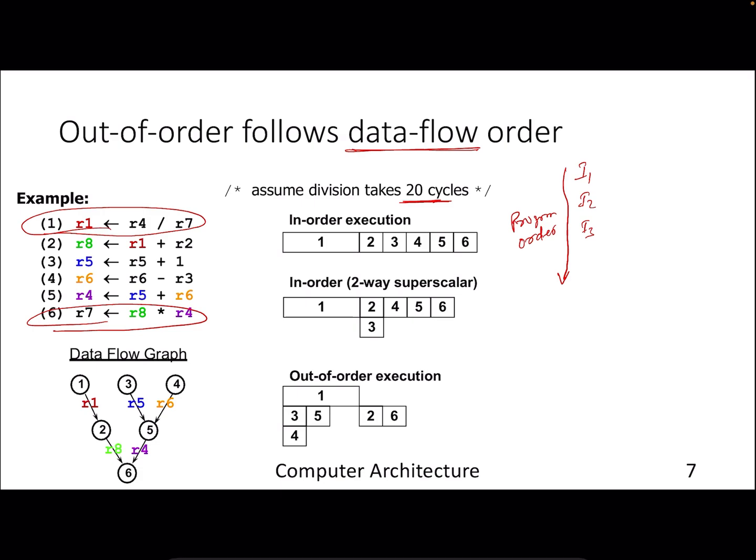To exploit out-of-order execution you should have multiple ALUs or multiple units for doing addition, division, subtraction, and multiplication — decided based on empirical results. For example, you might need two adders, two dividers, four subtractors, or whatever — because you are trying to execute out of order as long as there is no dependency, and you need structures that can support concurrent out-of-order execution.